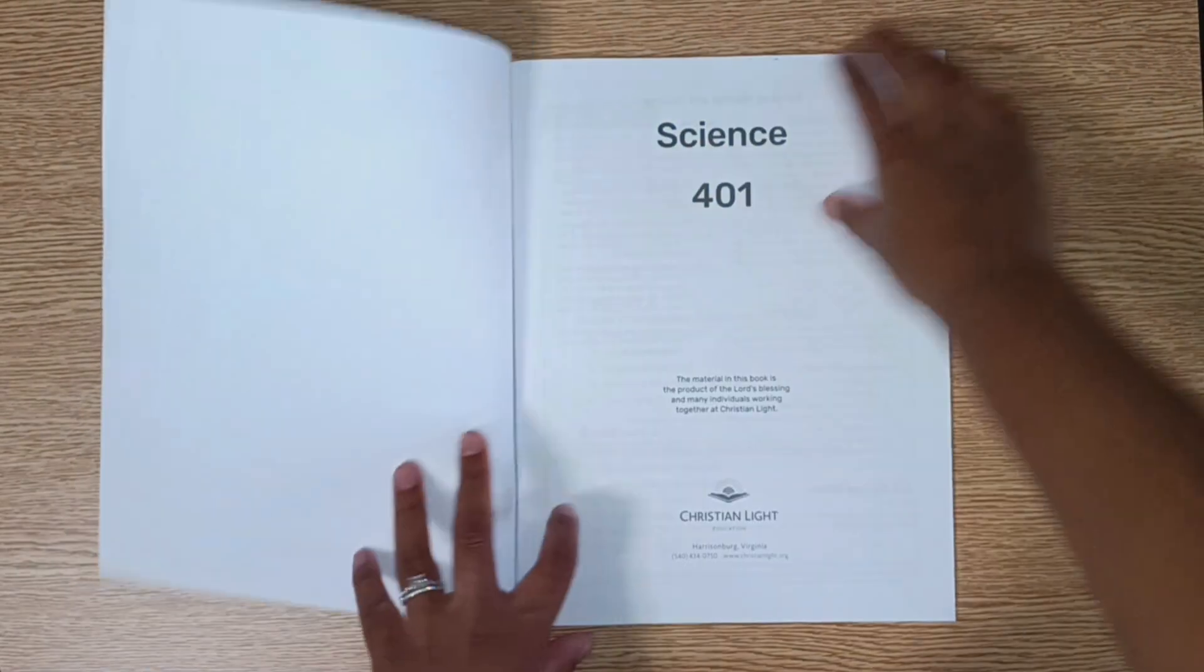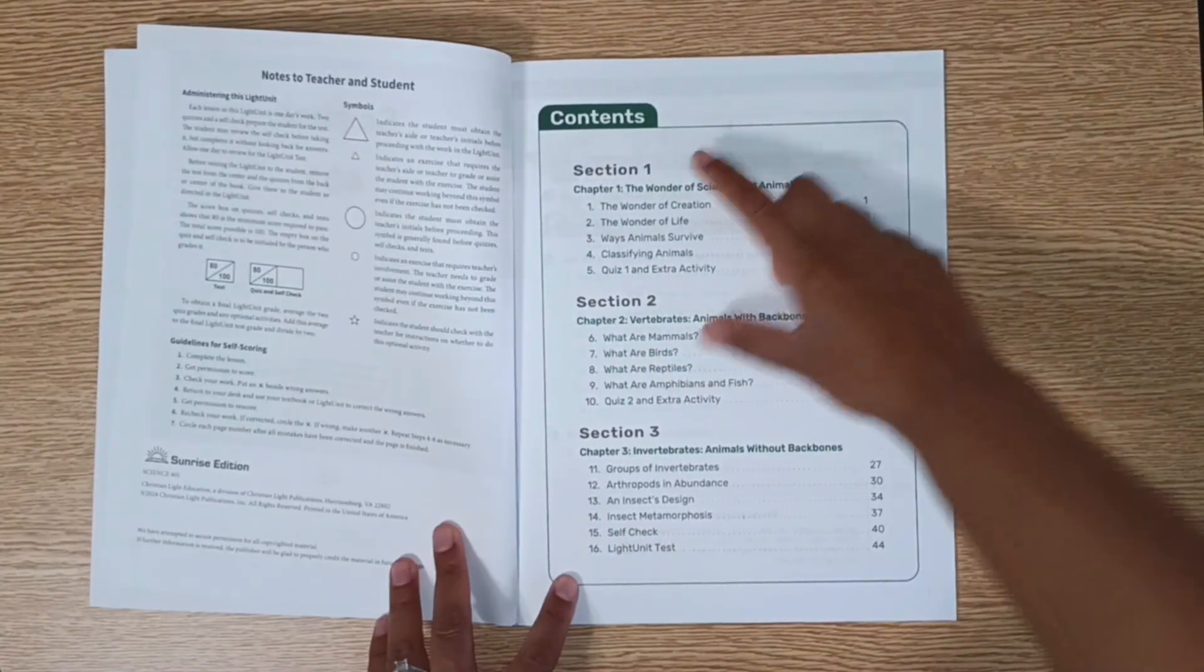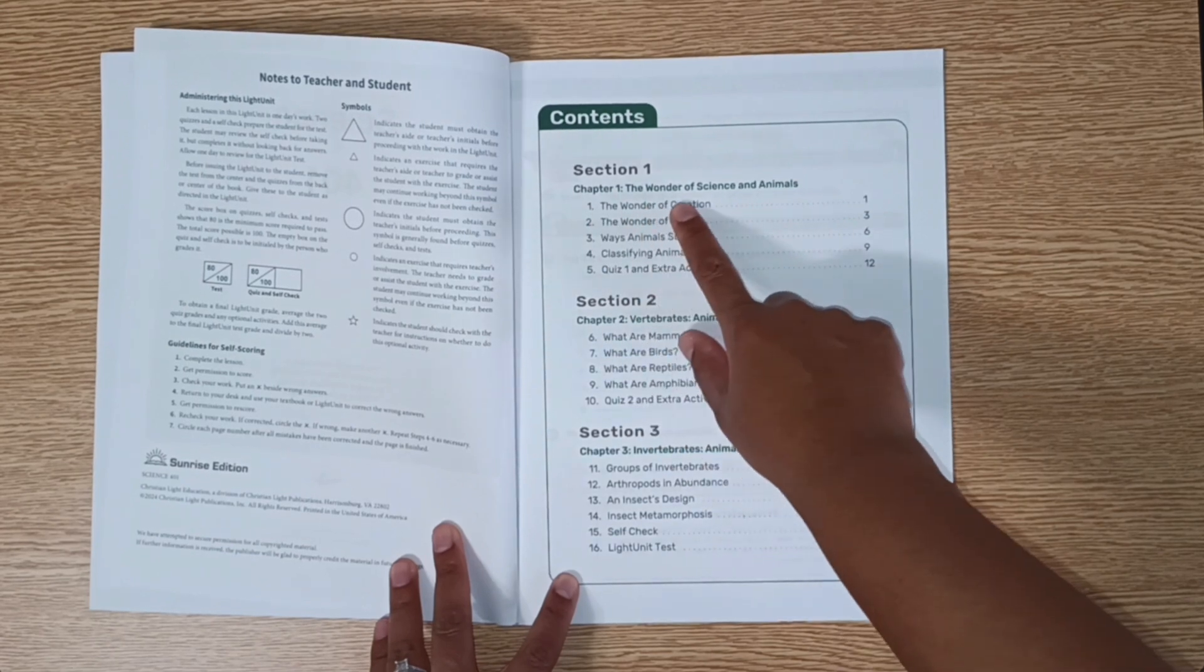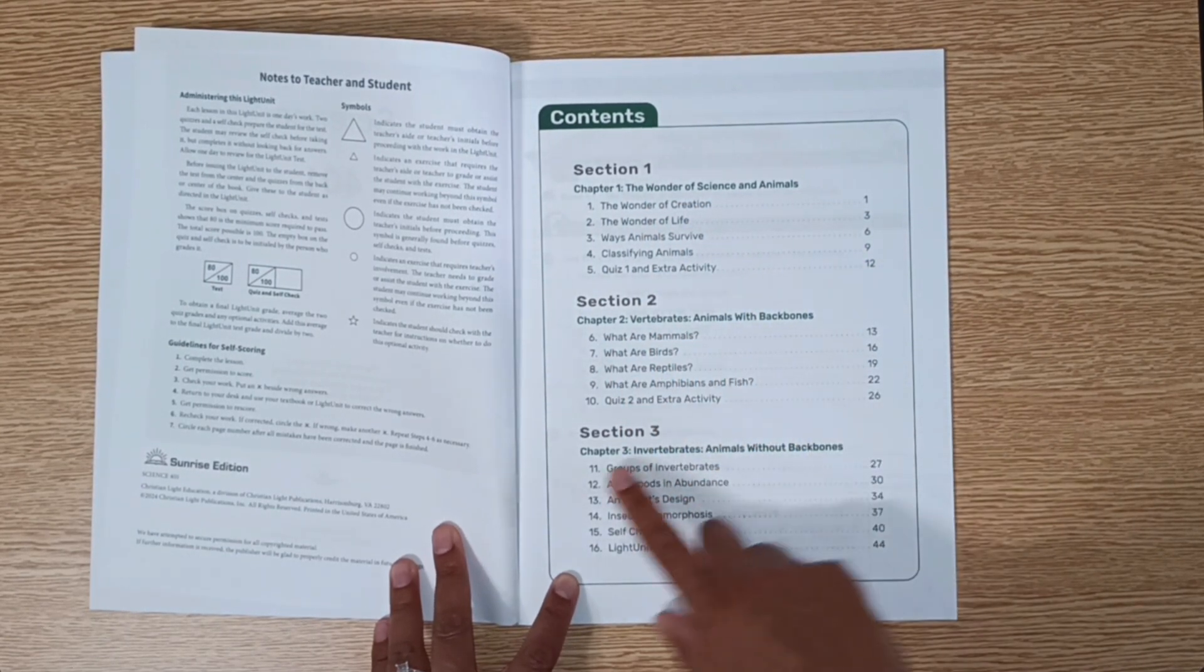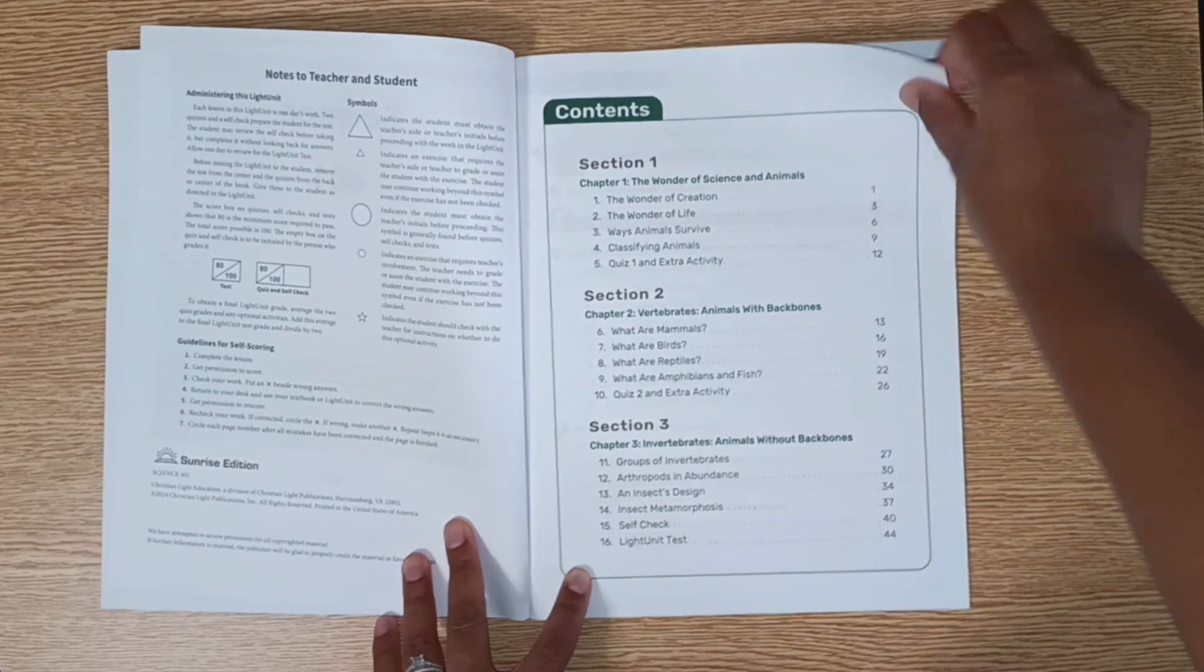This is Light Unit 401. Three sections. Chapter 1, the wonder of science and animals. Chapter 2, vertebrates, animals with backbones. And chapter 3, invertebrates, animals without backbones.